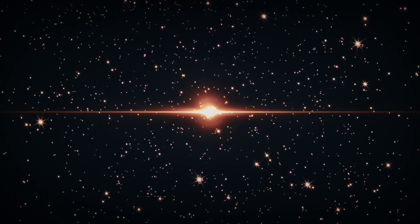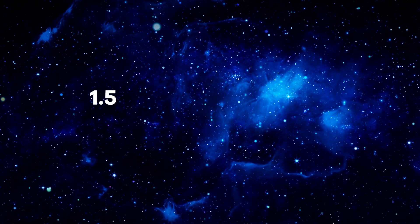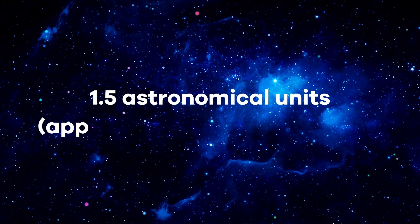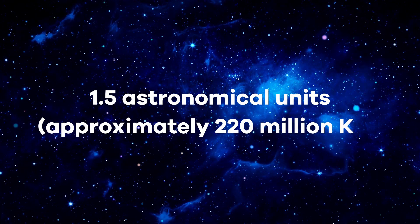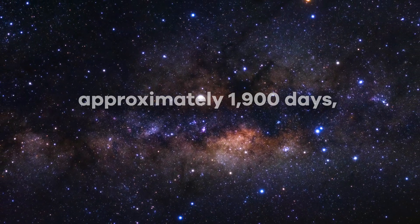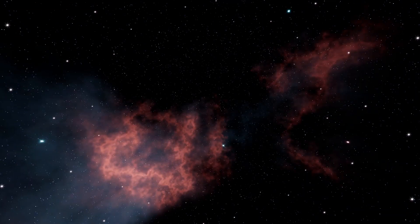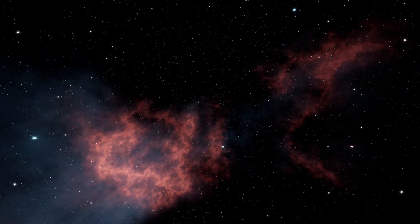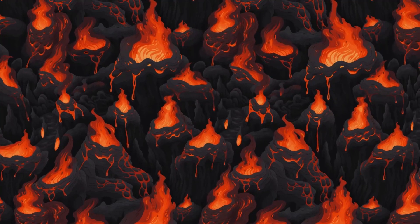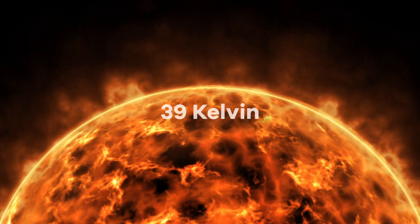It resides at a considerable distance from its host star, Proxima Centauri, orbiting at around 1.5 astronomical units, approximately 220 million kilometers. Its orbital period is quite lengthy, taking approximately 1,900 days, which is equivalent to about 5.2 Earth years. Due to this distant positioning from Proxima Centauri, the planet presents an extremely inhospitable environment, with an equilibrium temperature plummeting to a mere 39 Kelvin.